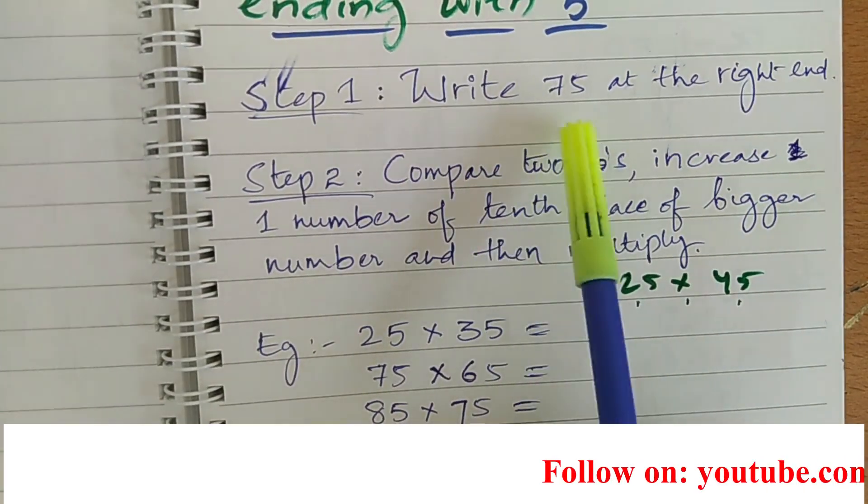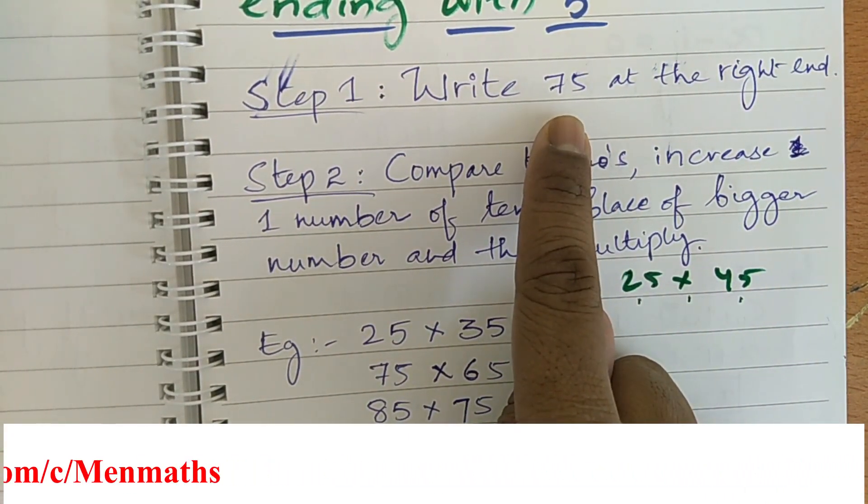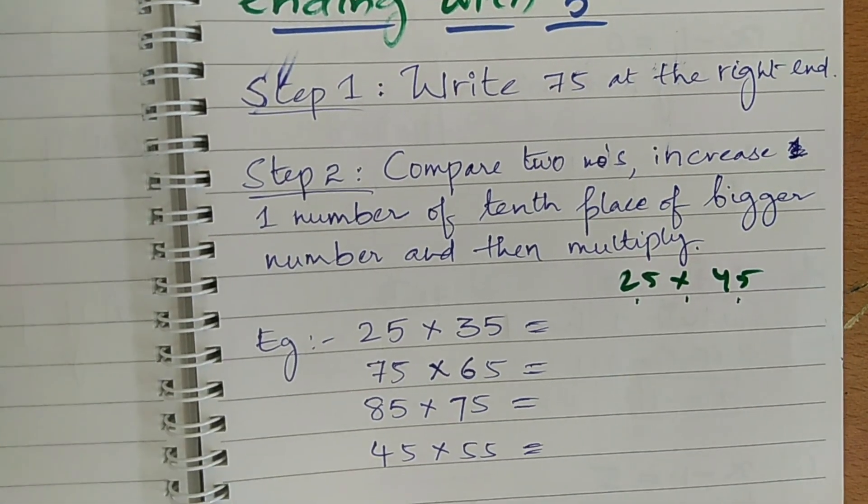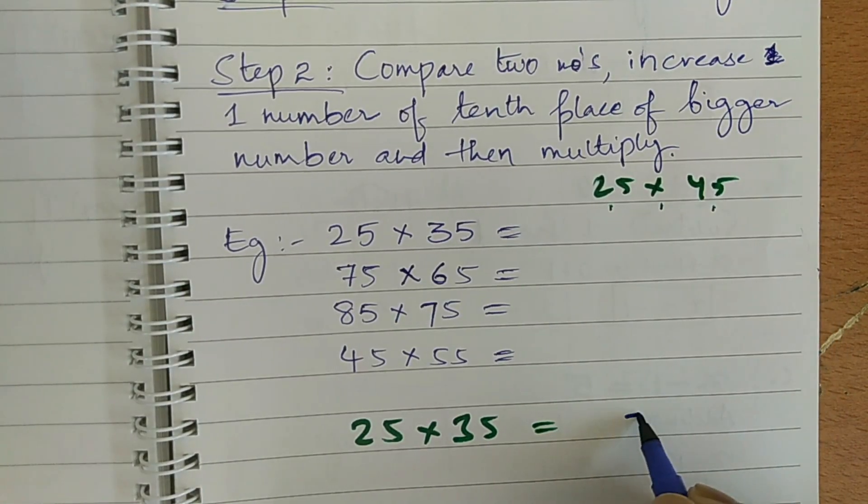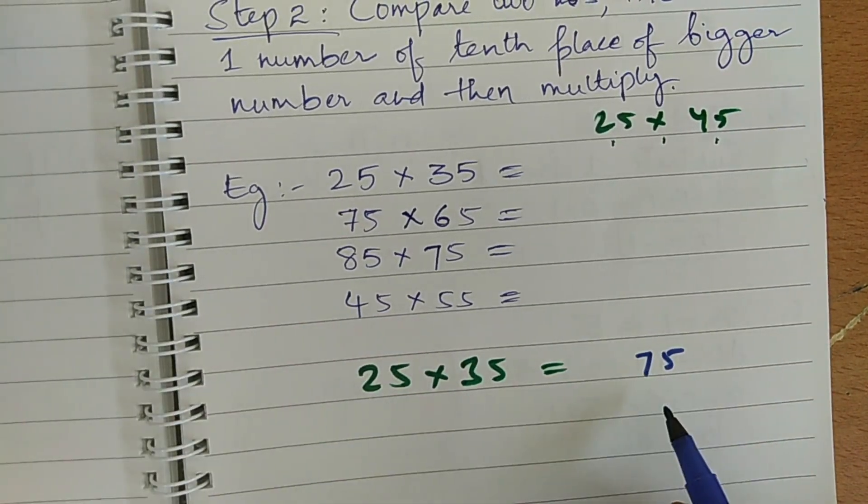Step number 1, write 75 at the right end. So, why I have taken here 75 directly, I will show you in the end of this video. So, keep watching this video until the end. So, first I will write here 75 at the end.